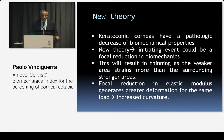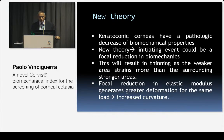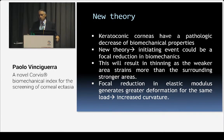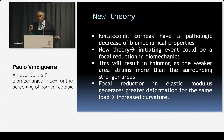A new theory was developed by Cinzia: keratoconic corneas have a pathological decrease in biomechanical properties that is focal and not homogeneous. So, we have a weaker area with less resistance to stress, and surrounding areas that are stronger. When you apply any force, like intraocular pressure, progressively the weak area becomes more steep in the first stage and then more ectatic. This focal reduction in elastic modulus generates greater deformation for the same load, but only in a small area.